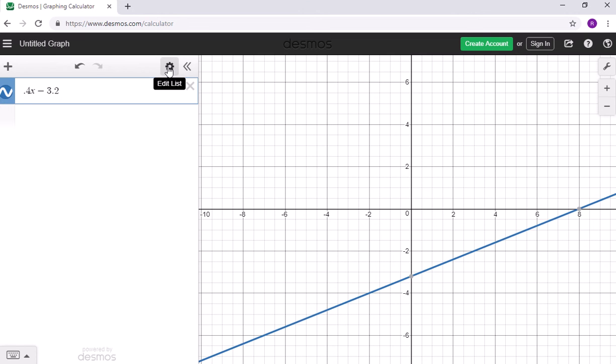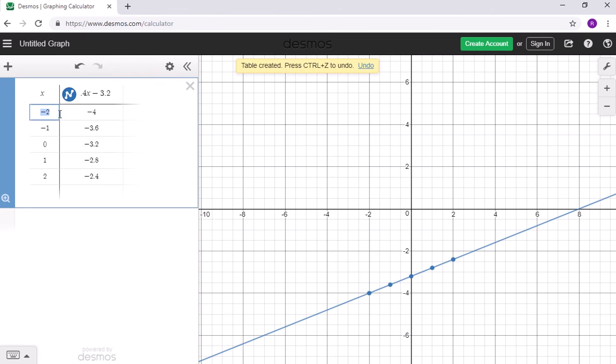If you look up at this settings symbol here, you have a table. It'll convert that line to a table.